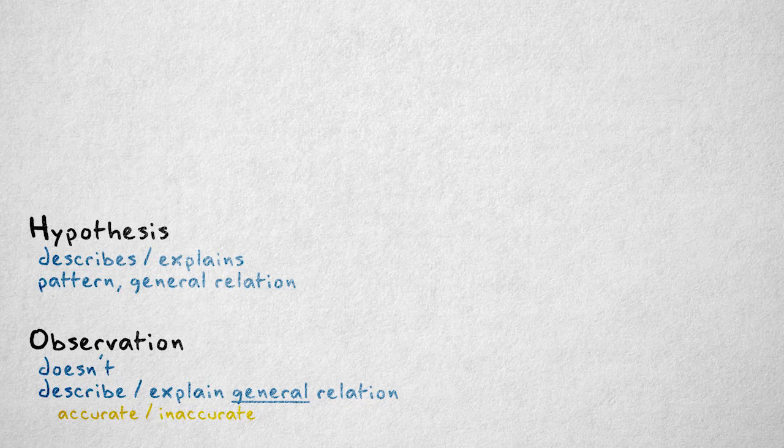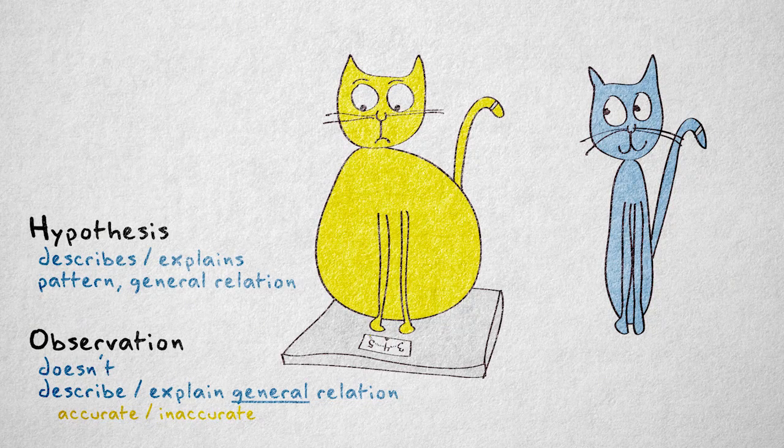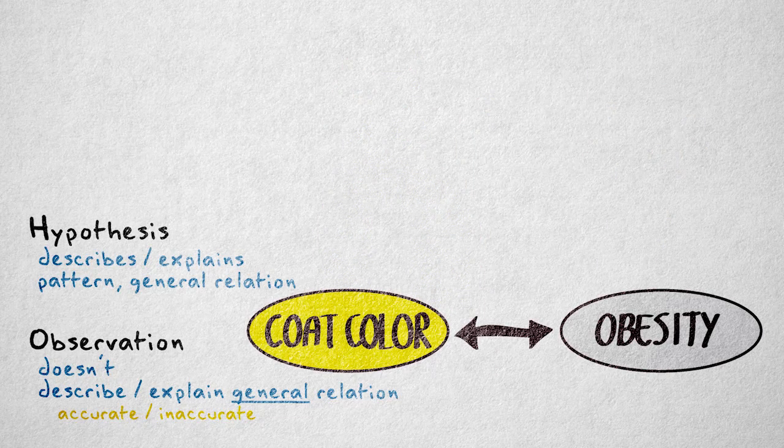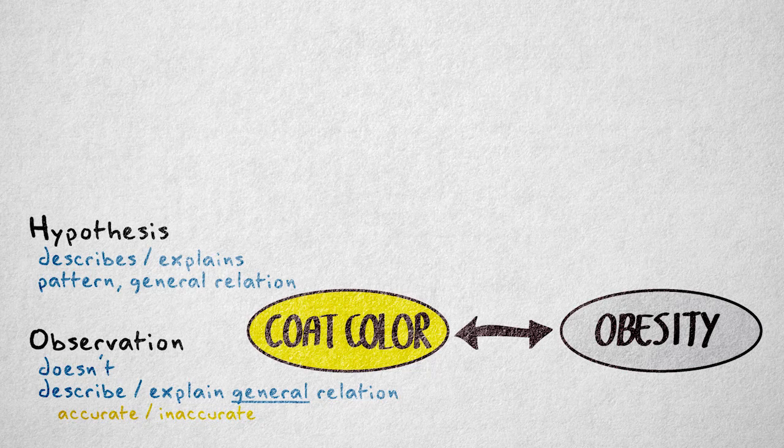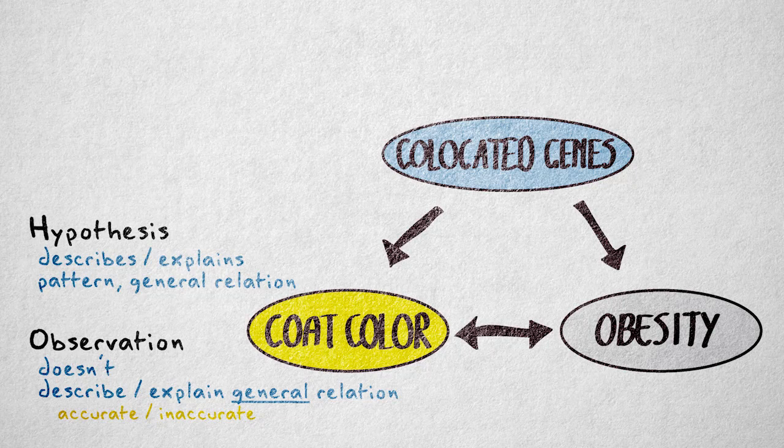Take this hypothesis. Ginger cats will, on average, be overweight more often than cats with a different color fur. And I could extend this hypothesis with an explanation for the relation between fur color and obesity. For example, by stating that the genes for ginger fur color and signaling fullness of the stomach are linked.